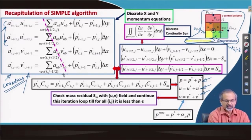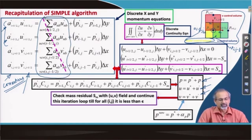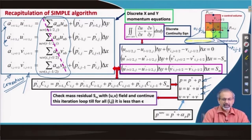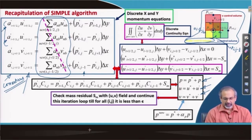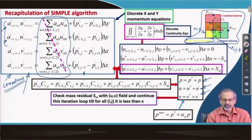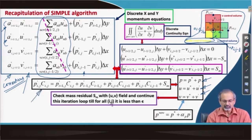We came up with the major approximation of the SIMPLE algorithm: the velocity corrections involving neighbor cells were all neglected. We struck them off, leaving only pressure corrections on the right-hand side. If you rearrange this equation and substitute it into the discrete form of the continuity equation, you come up with a pressure correction equation. Before doing that, we have a quick look at how the discrete continuity equation looks.